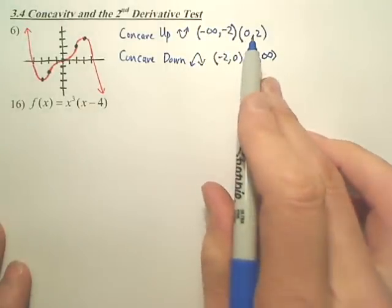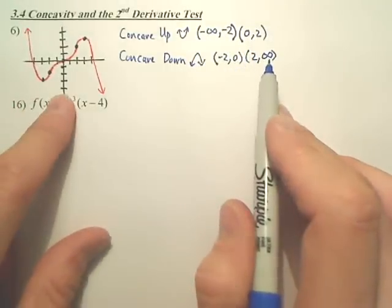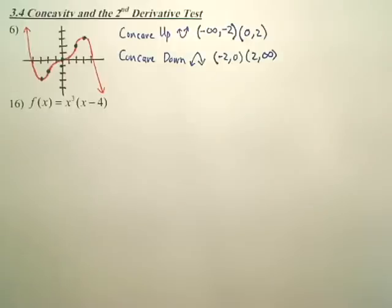So again, this is the intervals where it's happy. These are the intervals where it's sad. Depending on the look of it, think of it as a smiley face. What's it doing?